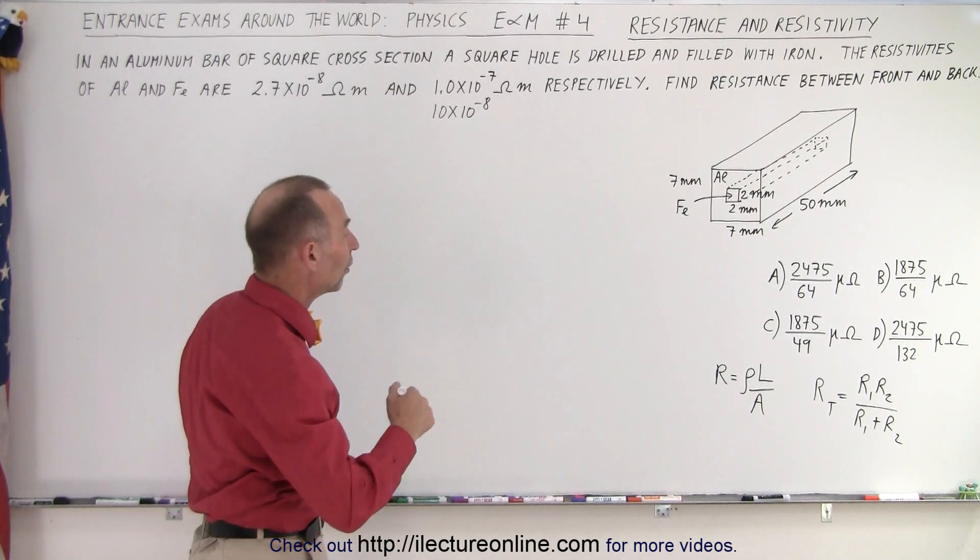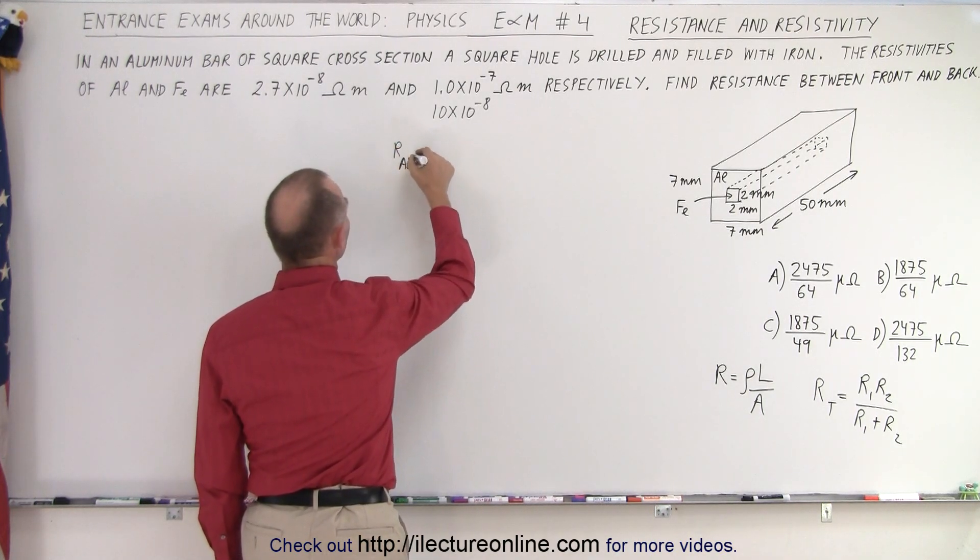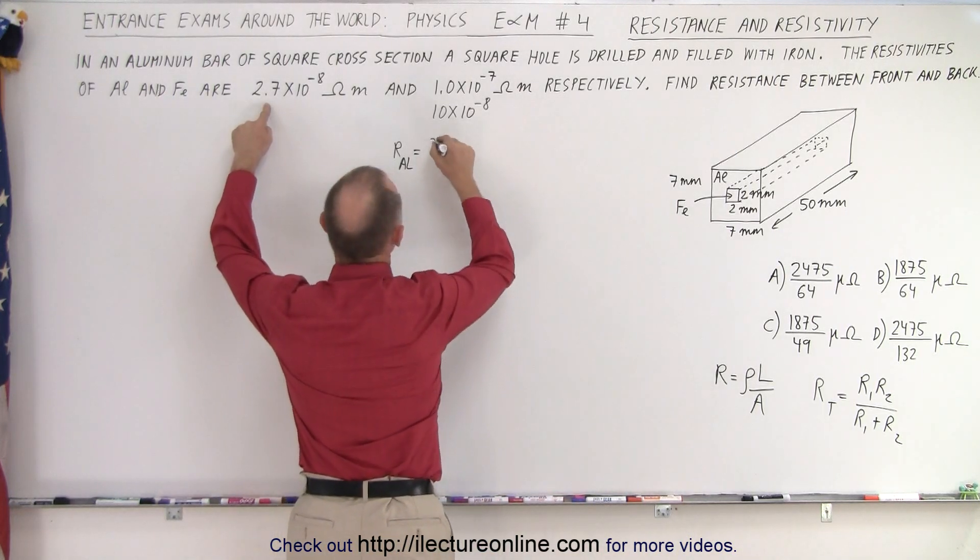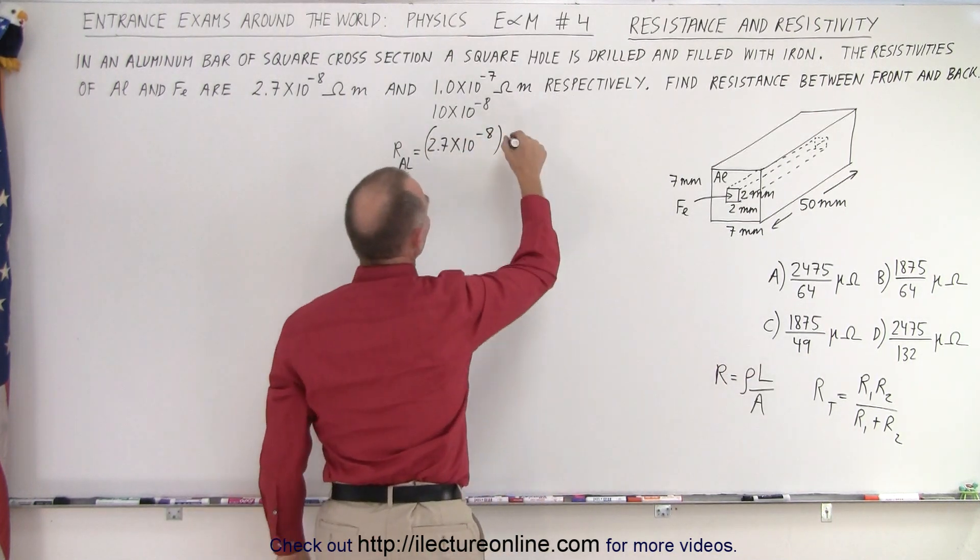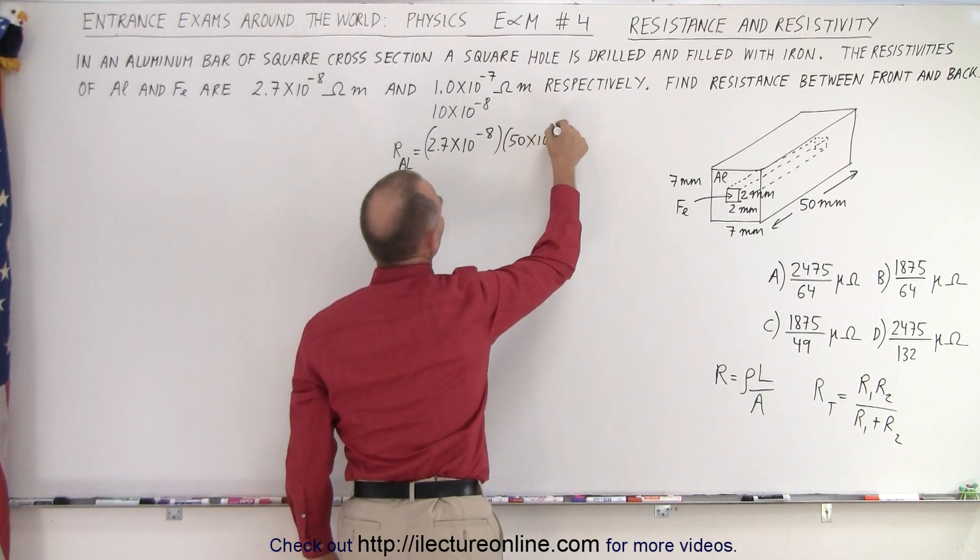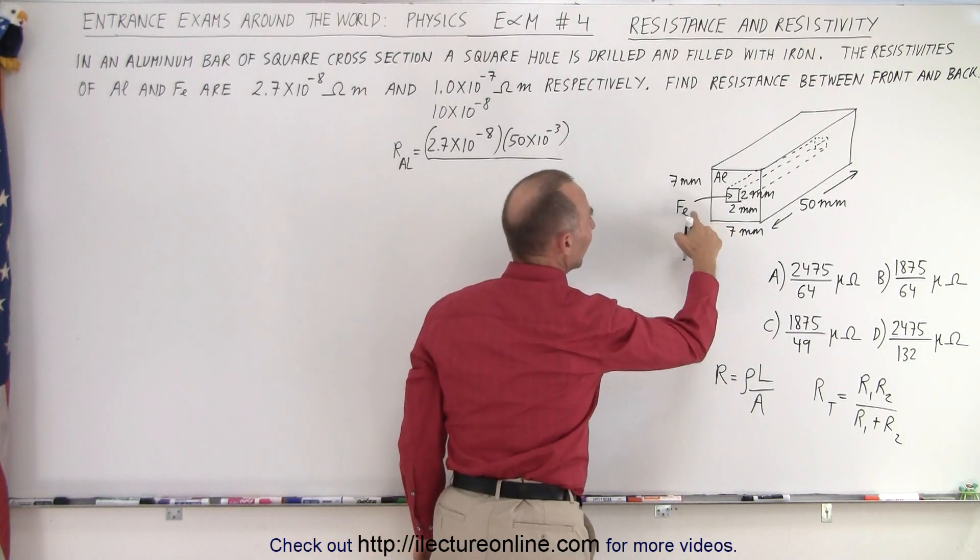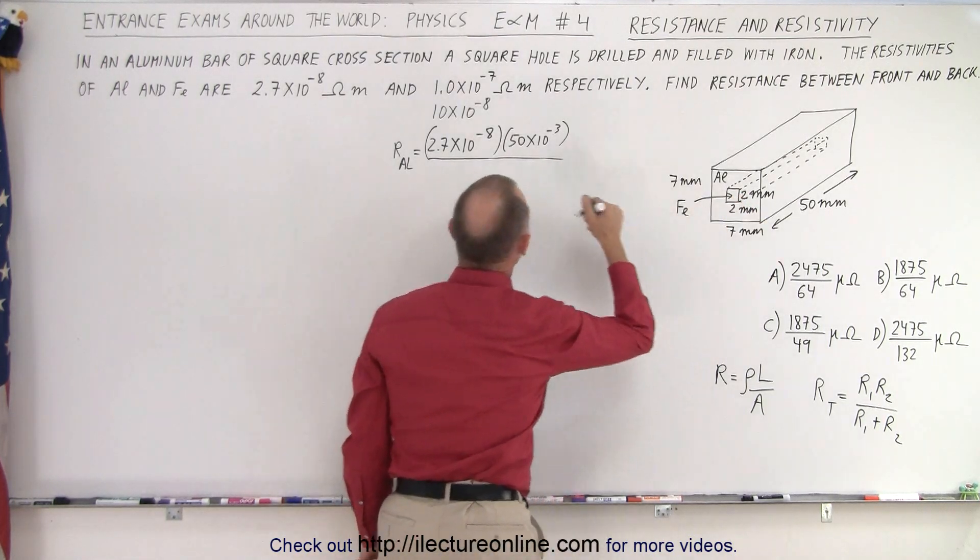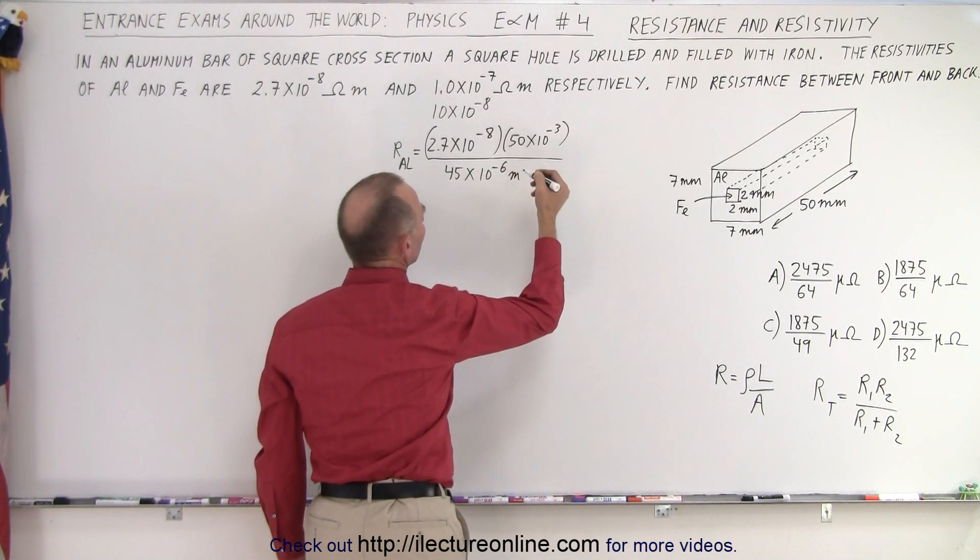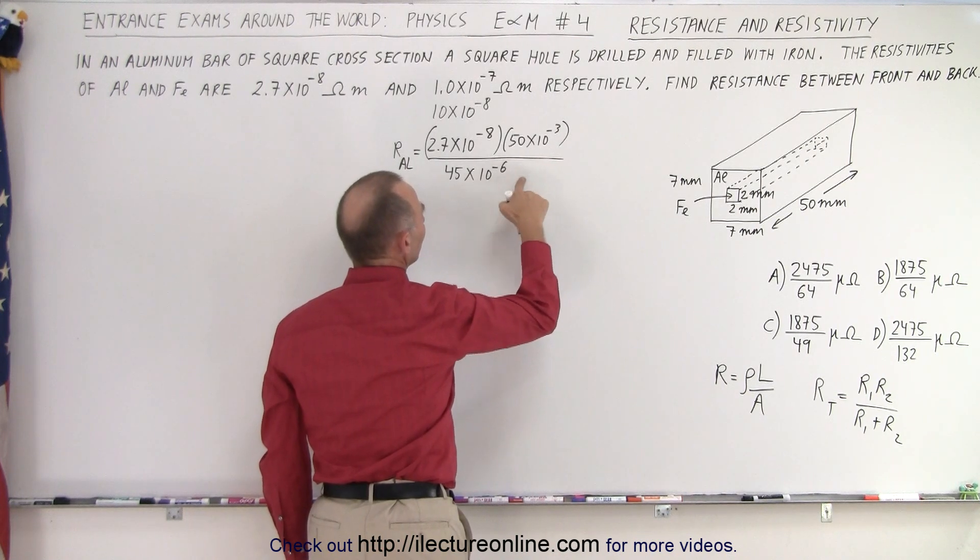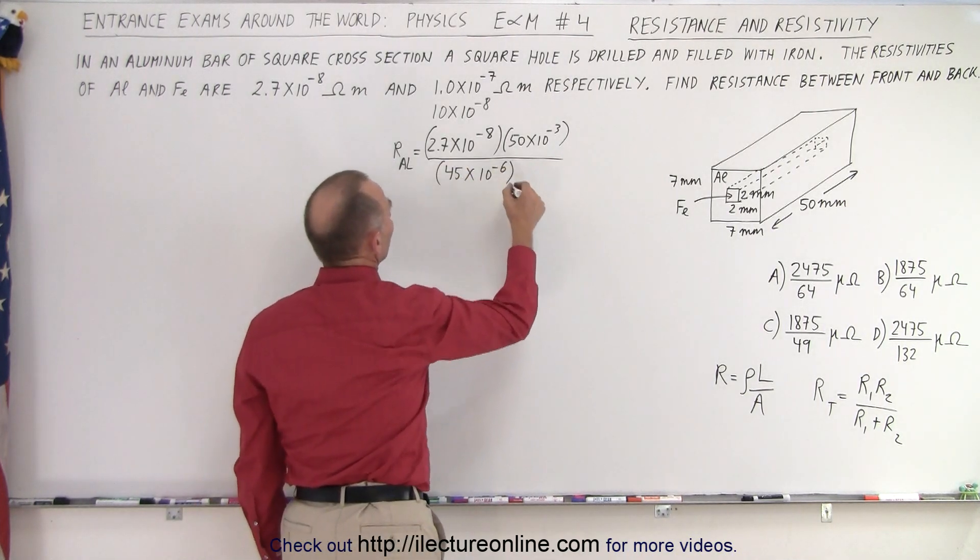So let's find R_aluminum and R_iron. The resistance of the aluminum is equal to the resistivity of aluminum, which is 2.7 times 10 to the minus 8, multiplied times the length which is 50 millimeters, which is 50 times 10 to the minus 3, all divided by the cross-sectional area which is going to be 49 minus 4 or 45 times 10 to the minus 6 meters squared.